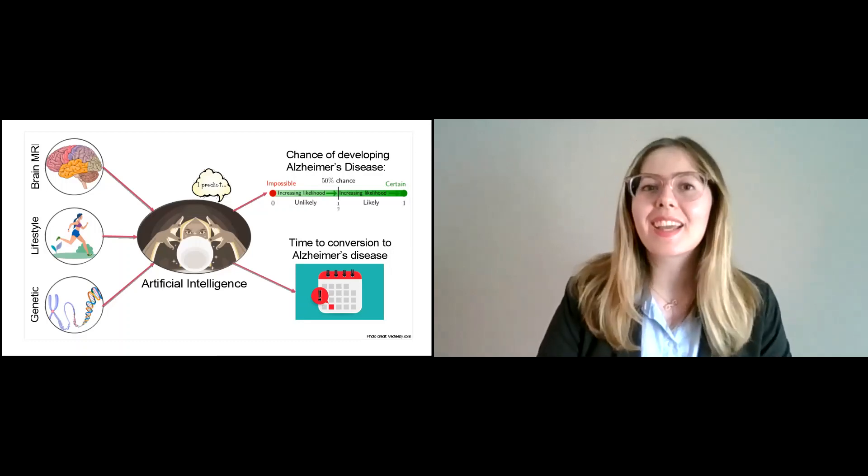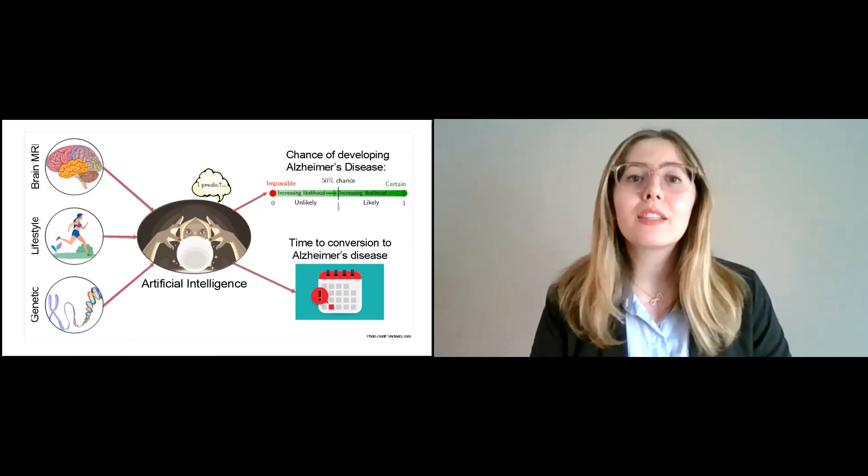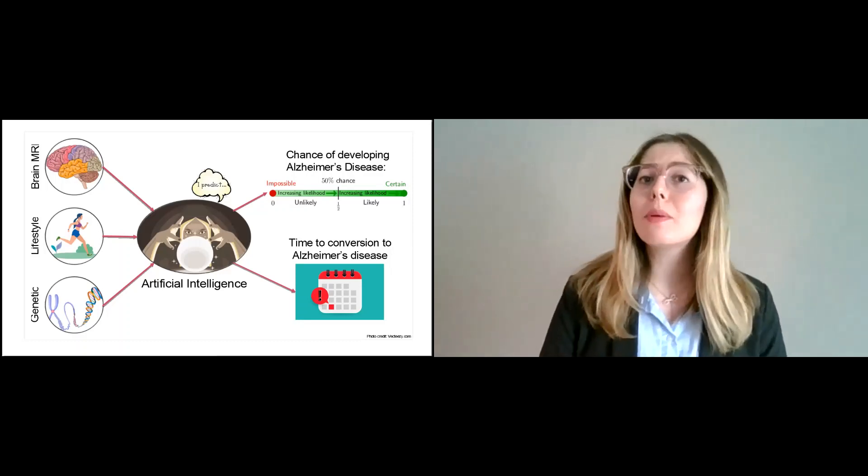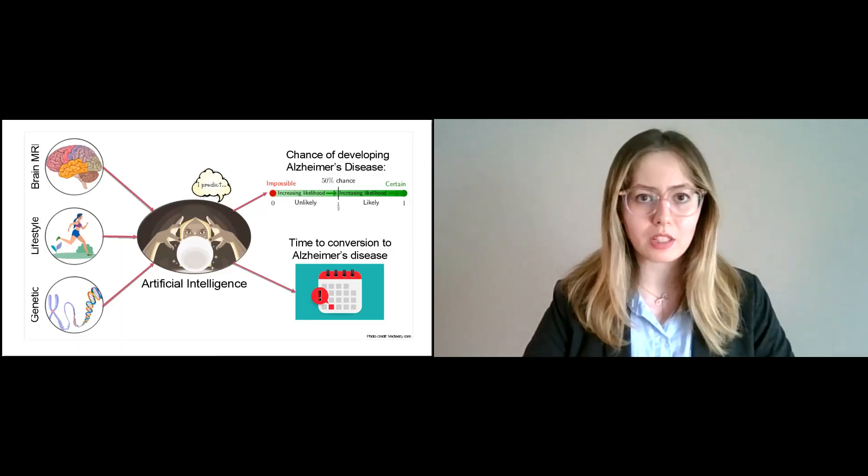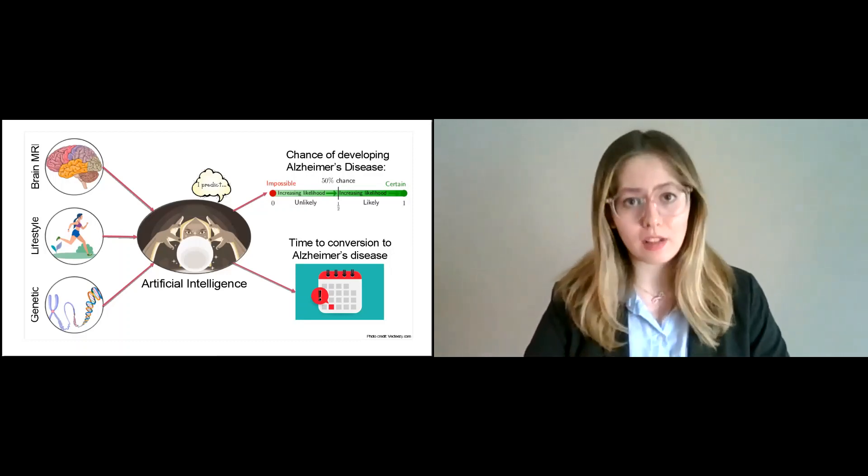The second thing is the time it takes for a patient to develop Alzheimer's disease. It might take a patient 5 years or another patient 10 years to develop Alzheimer's disease, while another patient might not even be at risk of developing it.